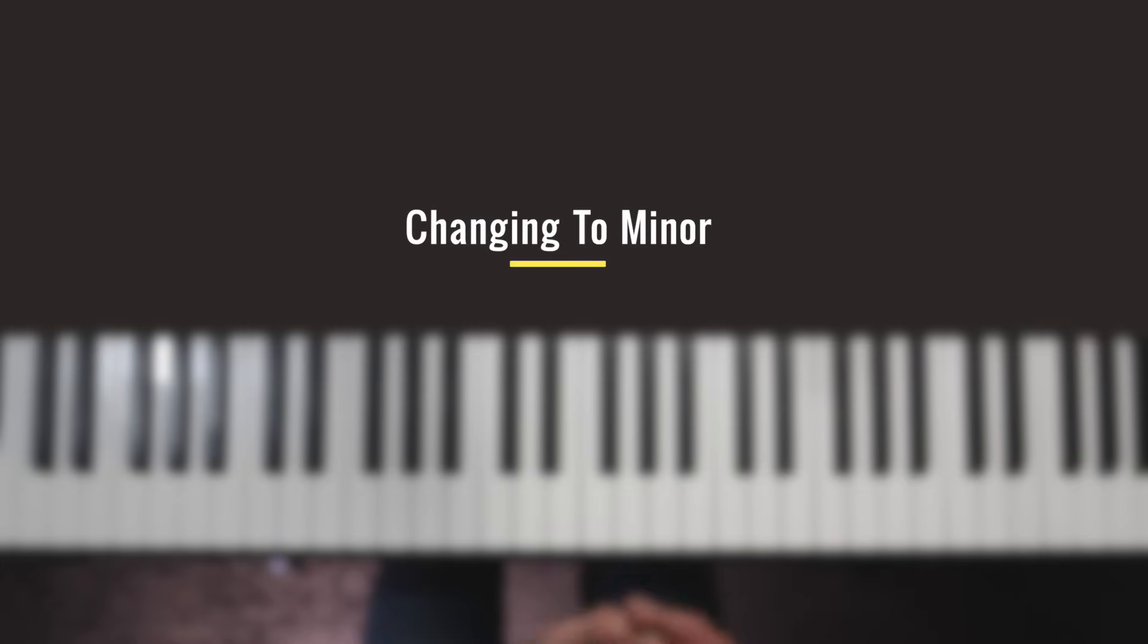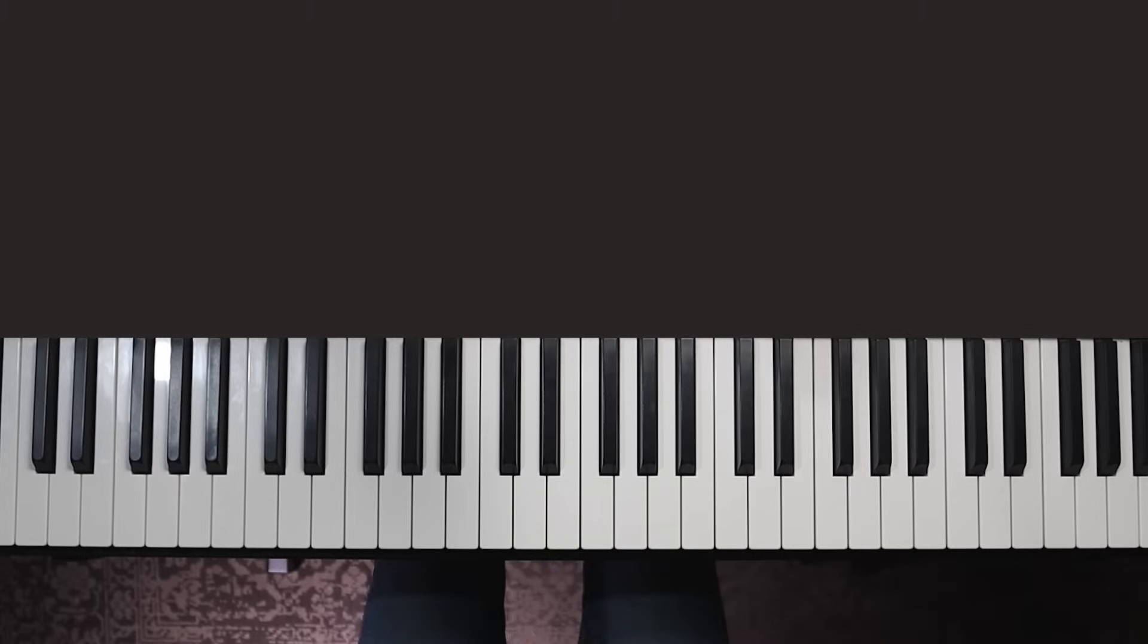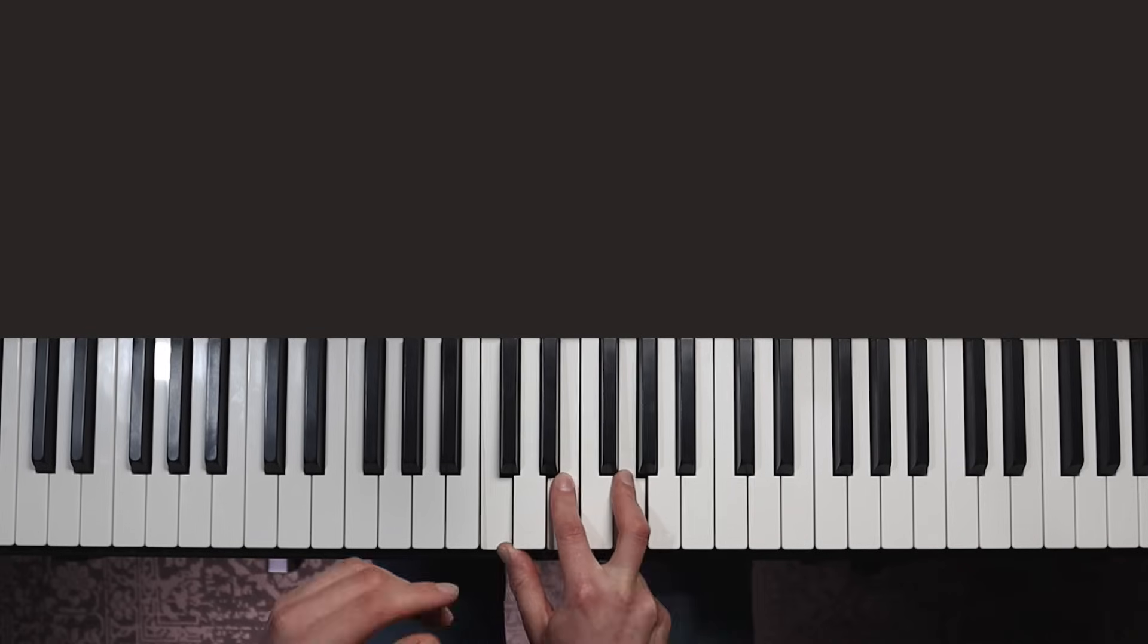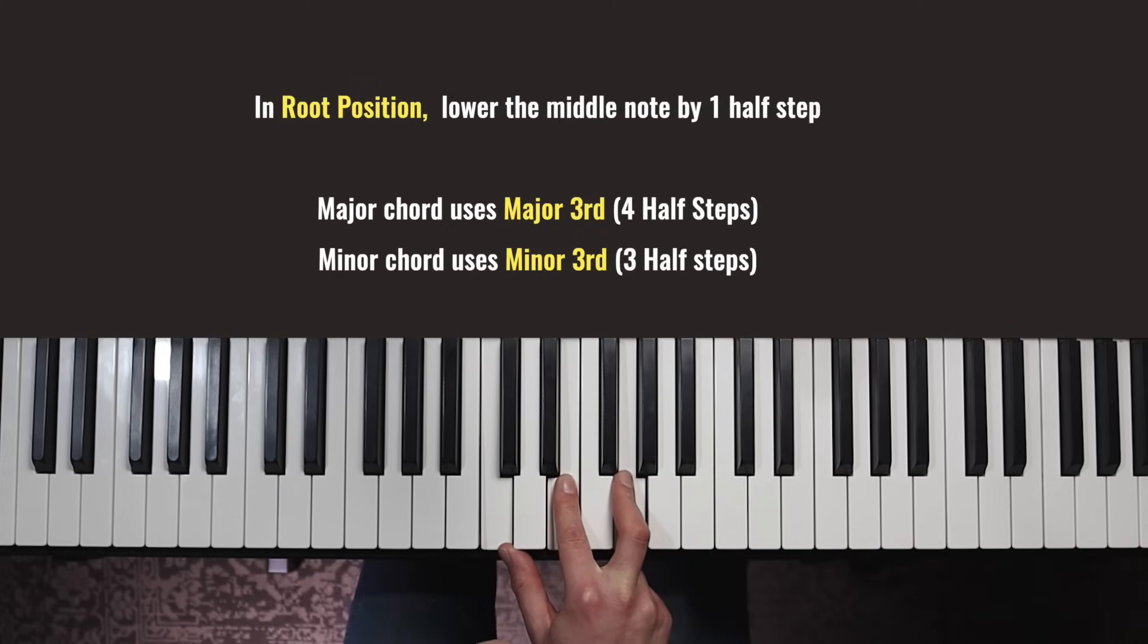Once you have a major chord memorized, you can then adjust the pattern like I'm about to show you to turn it into a minor chord. You don't need to start learning all 12 major chords before starting on the minors. In fact, you'll probably find learning both types starting from the white keys more useful and more common as a beginner. When we're playing these in root position like this, all we're going to do to turn this into a minor chord is lower that middle note by a half step.